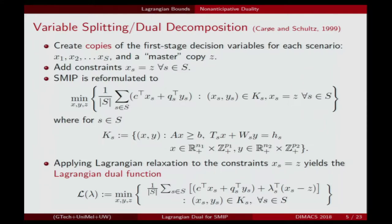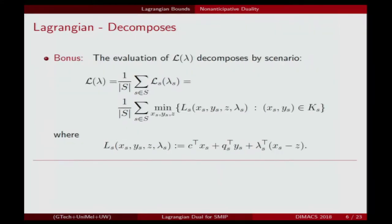We apply Lagrangian relaxation to the constraints that say they're all equal to each other, and we get this Lagrangian dual function. For each of the |S| constraints, we have a vector lambda_s. For any fixed lambda, if you solve this, you get a lower bound on our mixed integer program. What's nice is that this achieves our goal: it decomposes the problem for any fixed lambda into a separate subproblem for each scenario — each of which is a mixed integer linear program under one scenario.